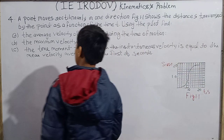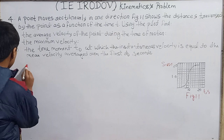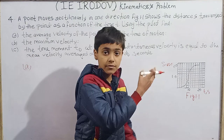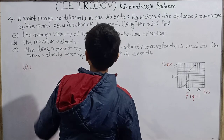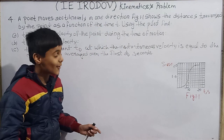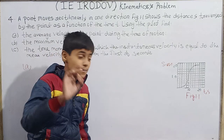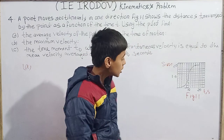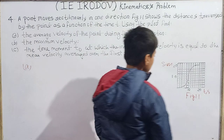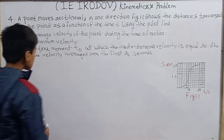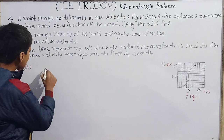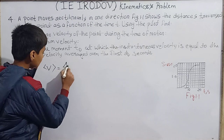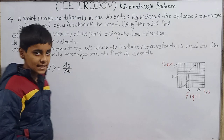Let's begin with part (a): we have to find the mean velocity, also called average velocity. The formula for average velocity or mean velocity is delta s divided by delta t — total displacement divided by total time.